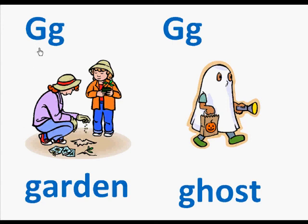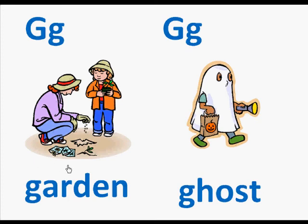Here we have the capital letter G, the small letter G, a picture of a garden. Here's the word garden. The letter G makes the sound guh. So we'll read this page: G, garden, guh guh guh.